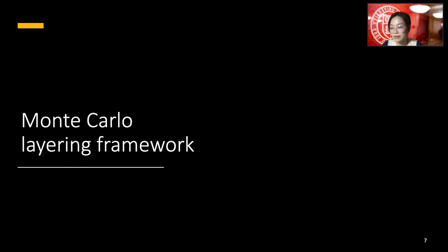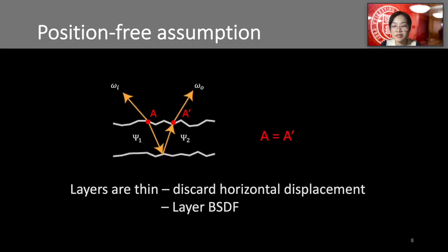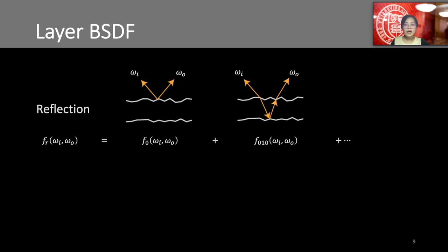Let me first talk about the Monte Carlo layering framework. We assume that the layers are thin enough so we can ignore the horizontal displacement of the exiting point relative to the incident point. In other words, we model the layered stack using one BSDF. With this position-free assumption, we can write out the layer BSDF evaluation as integration over only directions but not positions. Given all the single layer BSDFs, our job is to compute the total BSDF of the layer stack. This BSDF is the sum over all possible paths arriving at direction omega_i and traveling through the layers and exiting in direction omega_o.